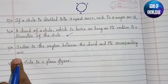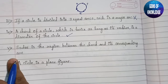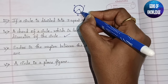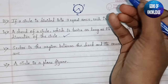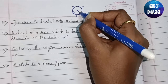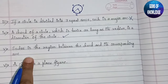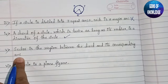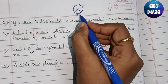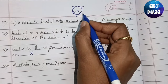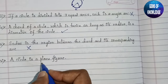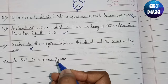Next: sector is the region between the chord and its corresponding arc — is this true? No, that is false. The sector is the region between two radii and one arc, not between a chord and its arc. So the answer is false.